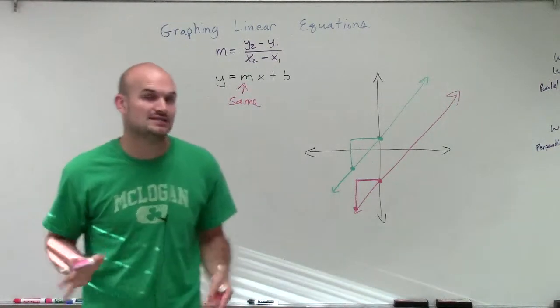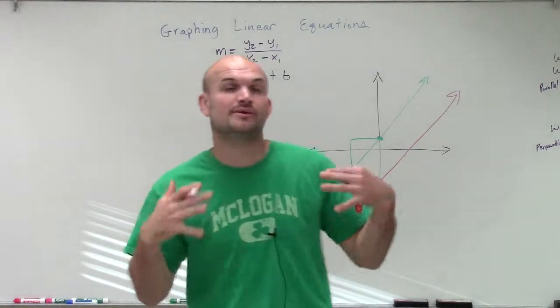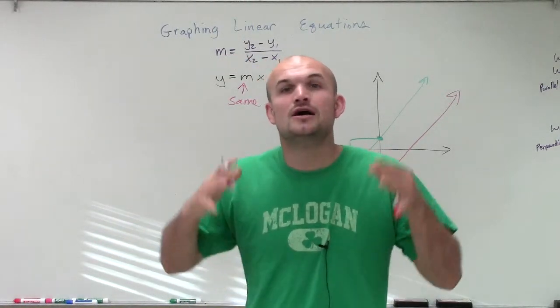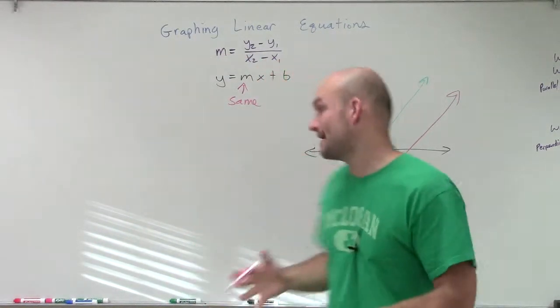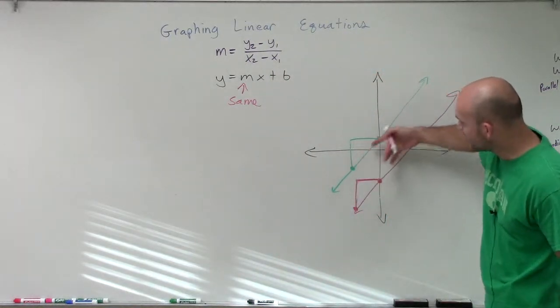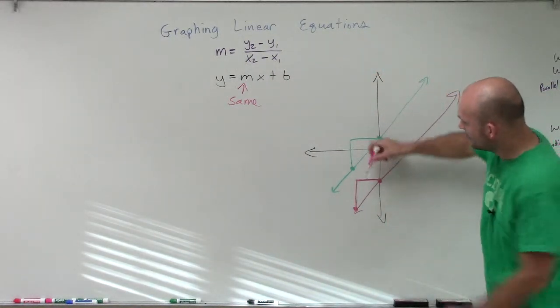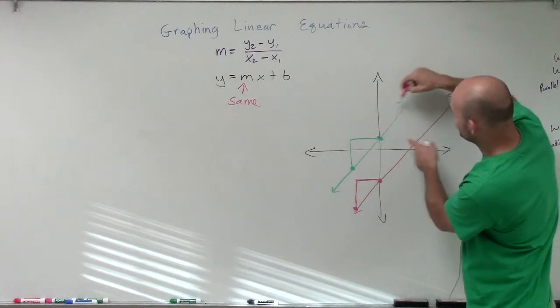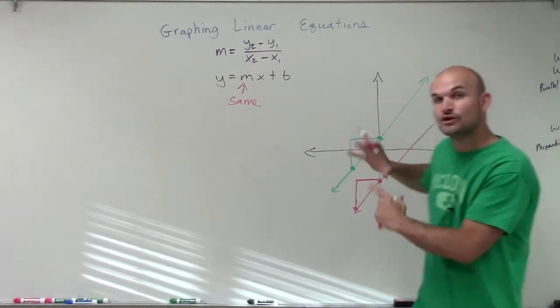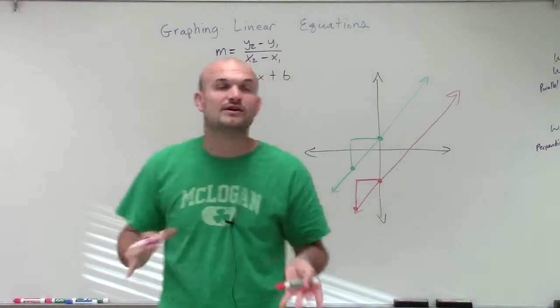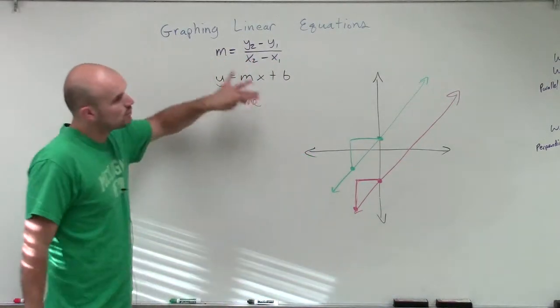So when you have parallel lines, the one thing we need to understand and make sure that we remember is parallel lines' slopes are exactly the same. And the reason being is because parallel lines are not going to touch. As they go up, they go over, they're going to keep on going up with that same rate of change. So they're never going to intersect. And that's very important for us to remember.